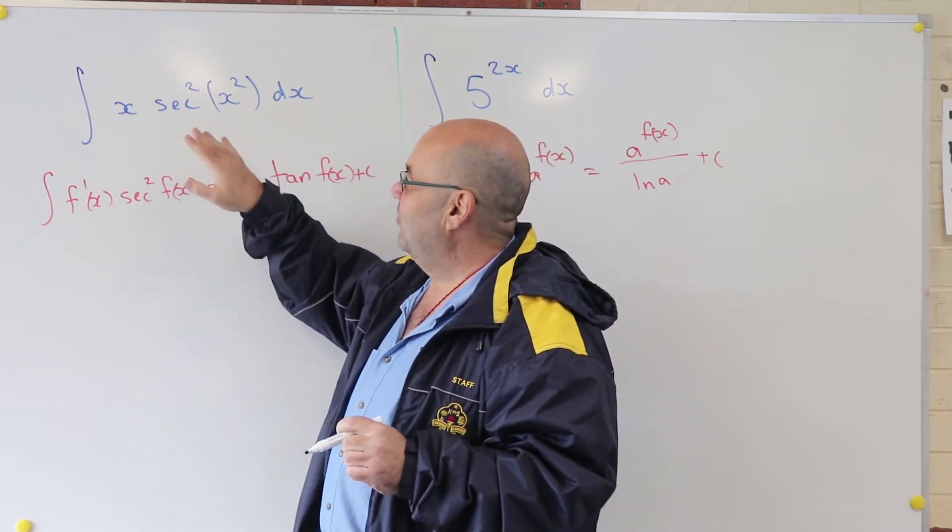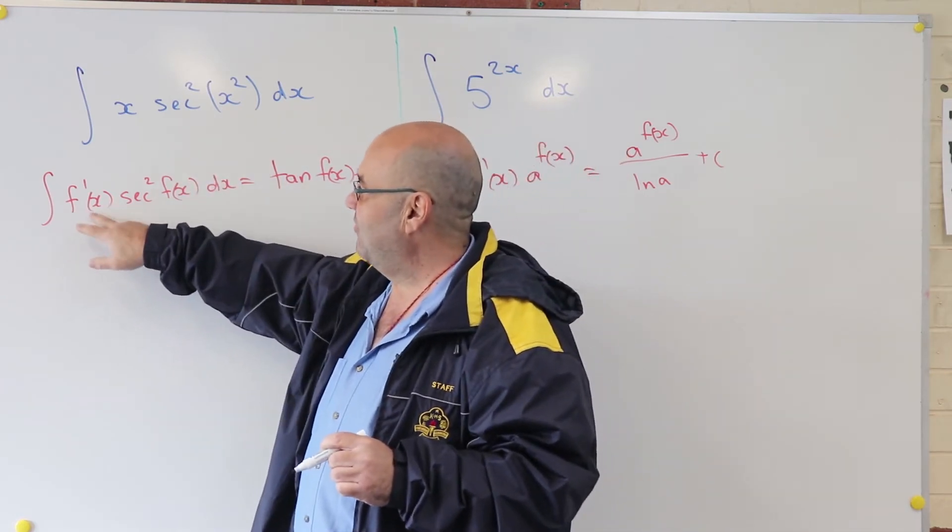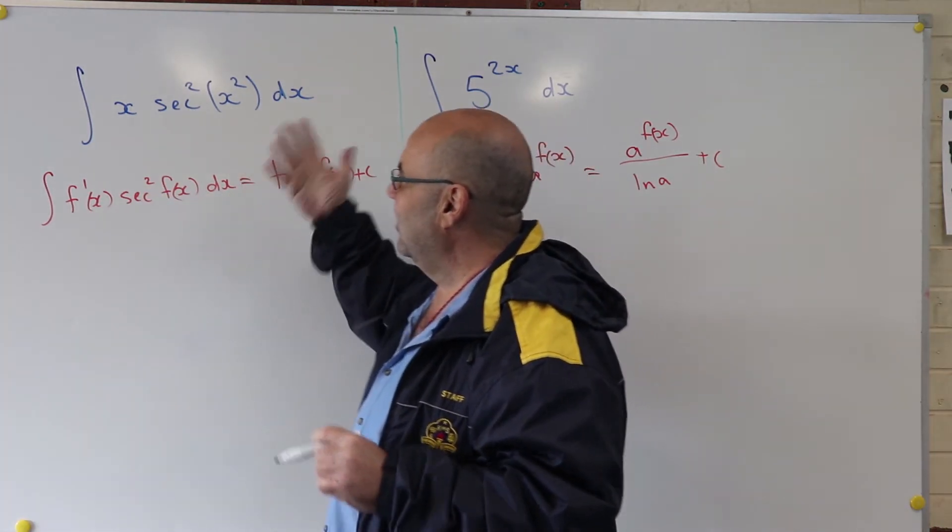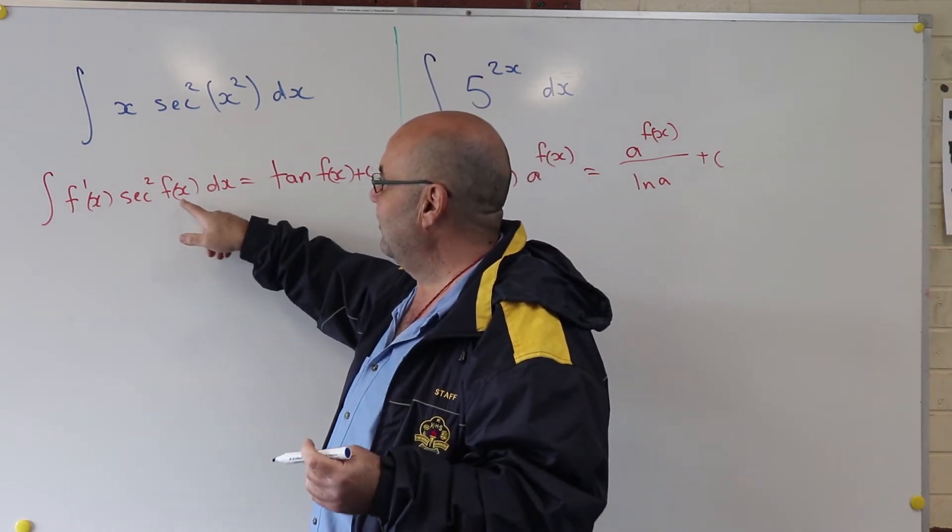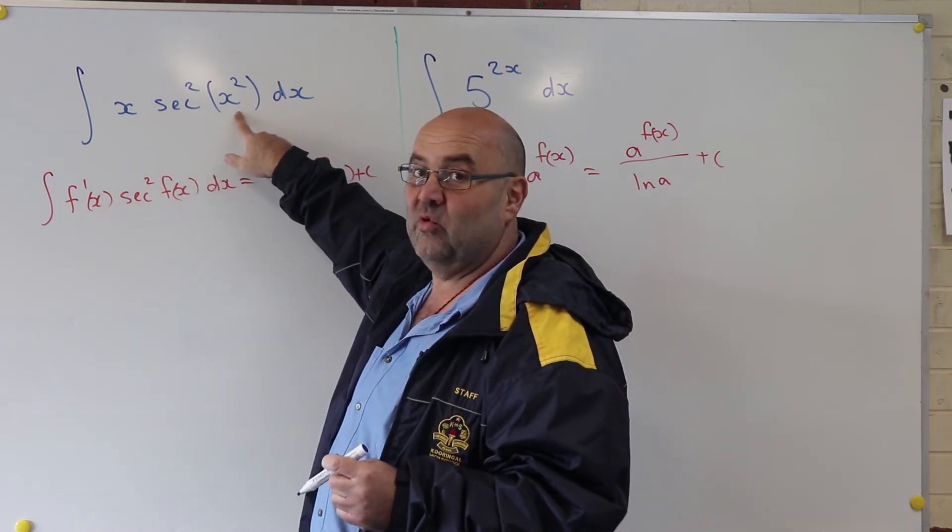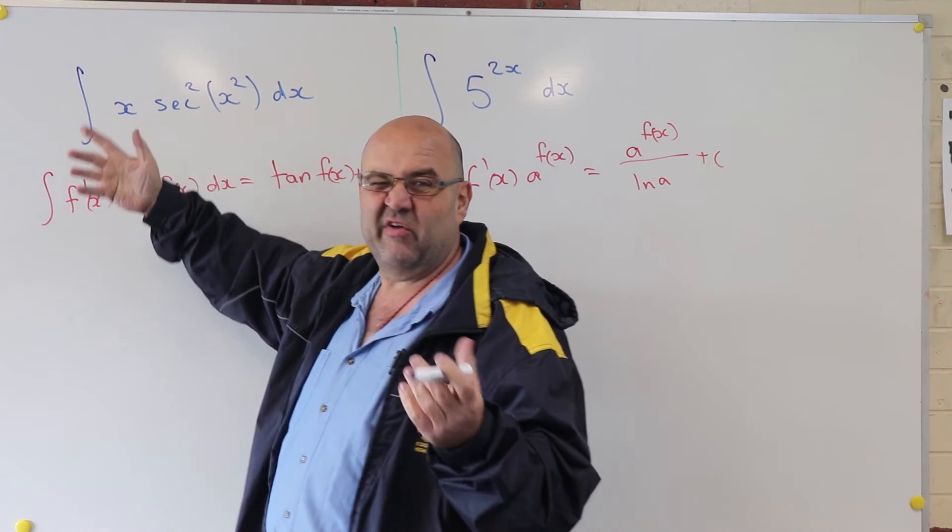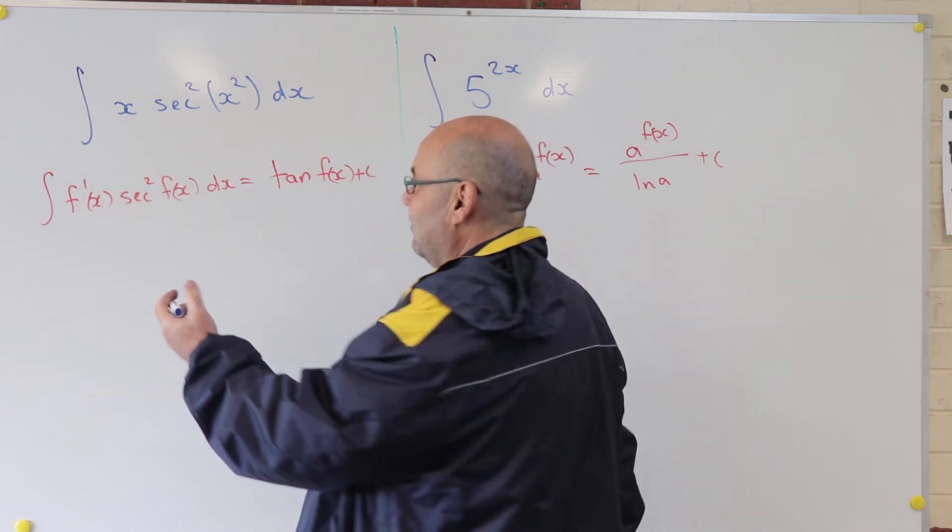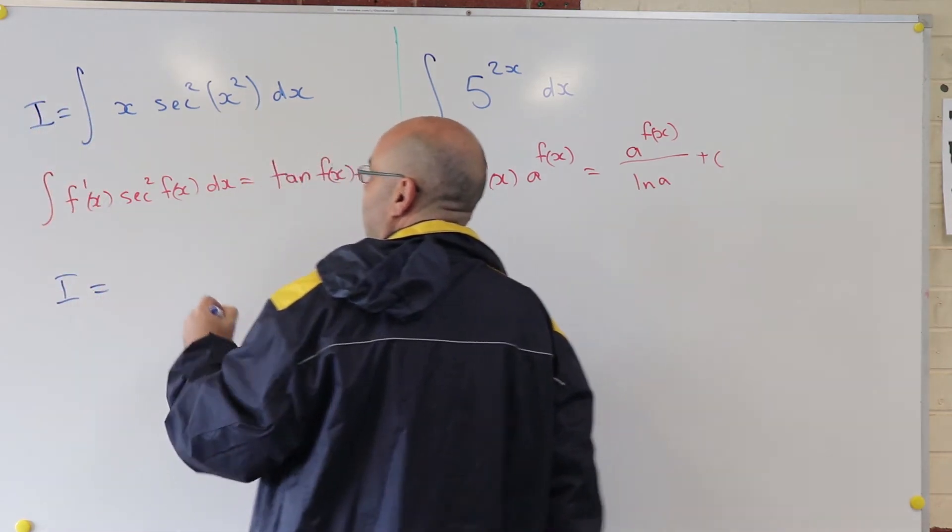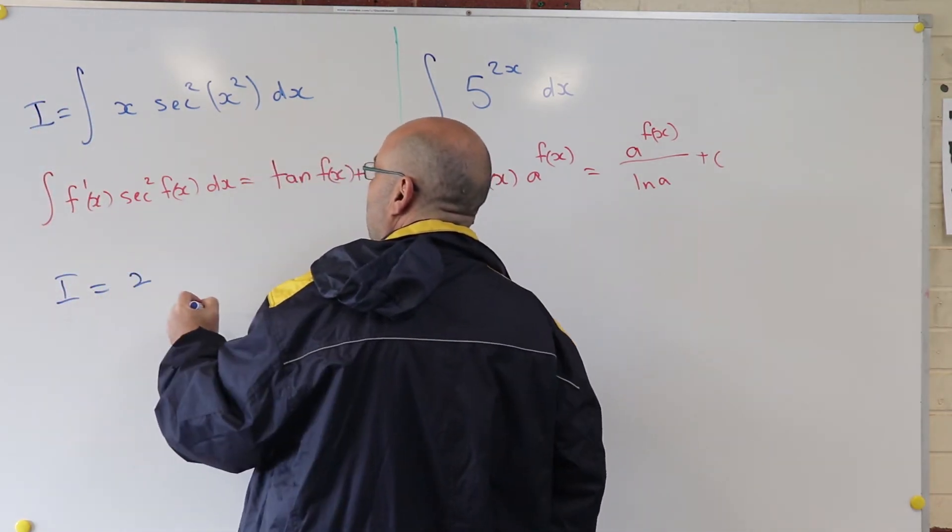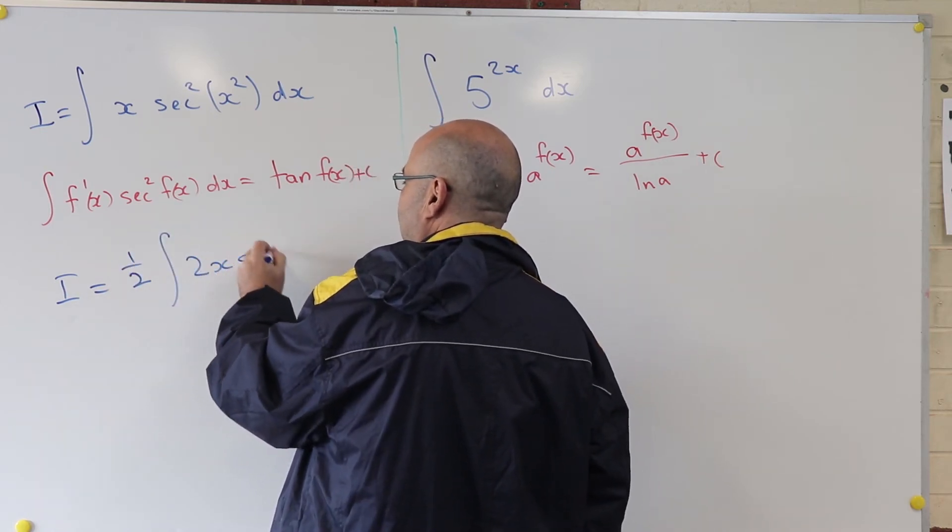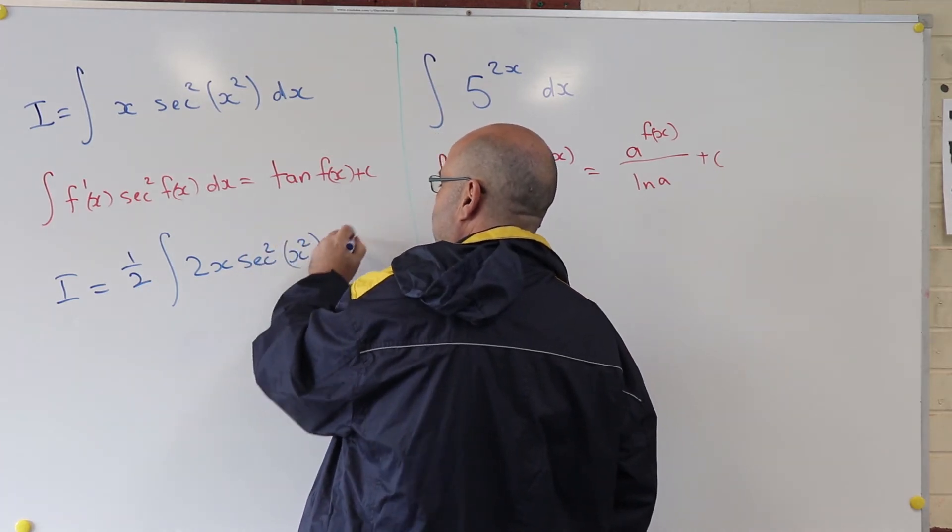So that standard form says that we integrate f'(x) sec² f(x) and we get tan of f(x). Fantastic. That means that I need the derivative of what's here out the front. Well, the derivative of what's here is 2x. So I needed 2x out the front. I've only got an x. Well, that's easily remedied. So my integral is equal to a half times 2x sec²(x²) dx.